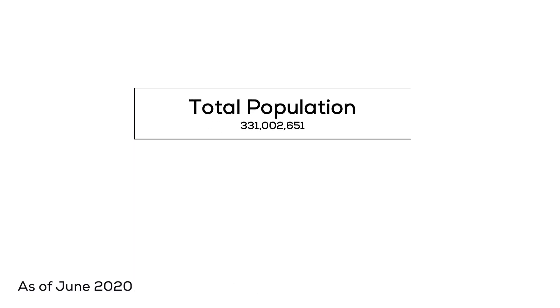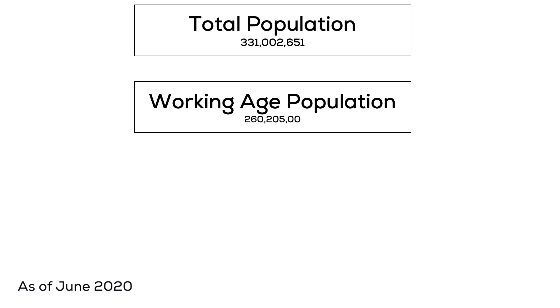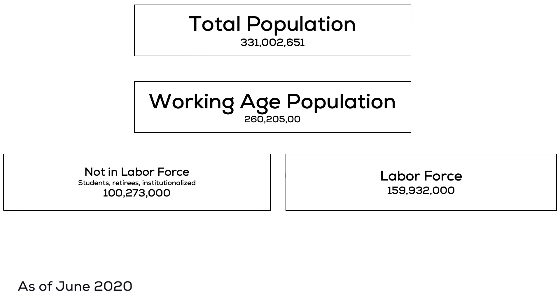The BLS uses this data to separate people into different categories. The total U.S. population is roughly 330 million people. The first important definition is working age population, which includes civilians above the age of 16 that are non-institutionalized. The military is excluded from unemployment and labor force calculations. That group is then split into two different categories: the labor force and not in the labor force.